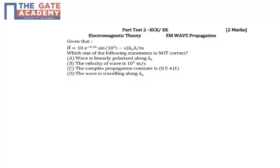So, in this question, it is given that H is equal to 10 e to the power minus 0.5x sine 10 raised to the power 5t minus x ax. I have to check which of the following option is not correct.